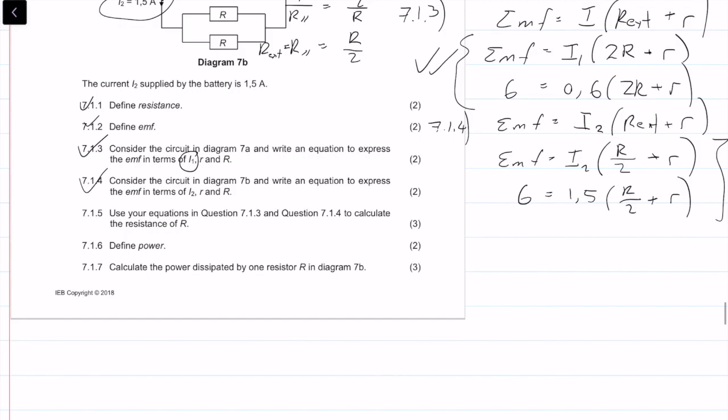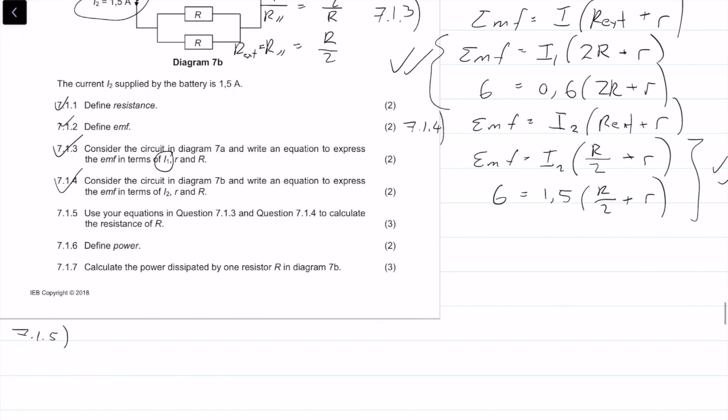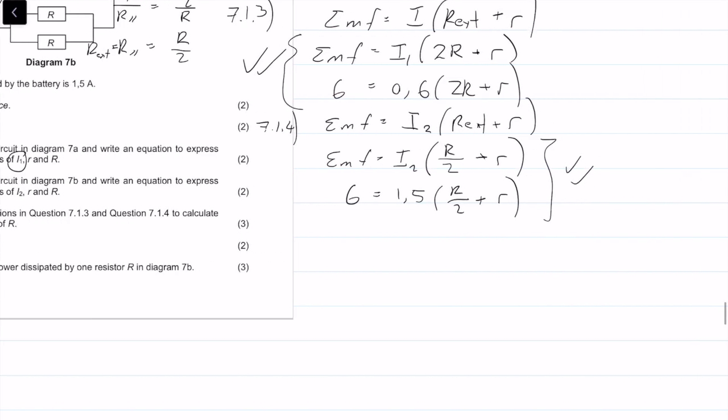7.1.5: use your equation in question 1 to calculate the resistance. Basically what it's trying to tell us is that we have two equations and two unknowns, so we can solve them simultaneously. I'm going to give this equation 1 and that equation 2.